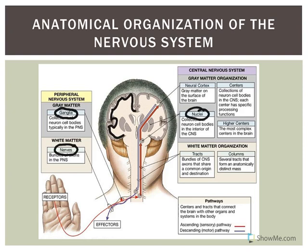We have white matter in the brain also. These axons carrying sensory information eventually have to get up to certain areas in the cerebral cortex. If you initiate a voluntary muscle movement, it'll originate up in the cerebral cortex but then has to travel down. So we have gray matter and white matter within both the peripheral and the central nervous system.